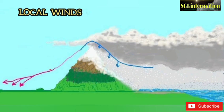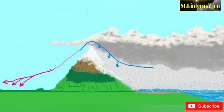Local winds: some winds affect small areas and are restricted to the lower levels of the troposphere. These winds develop mainly as a result of local differences in temperature and pressure — for example, the loo wind in India. Friends, if you like my video, don't forget to subscribe, like, and share my channel. Thanks for watching.